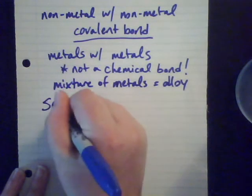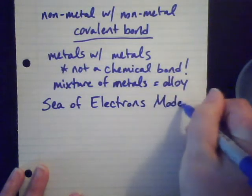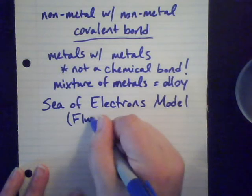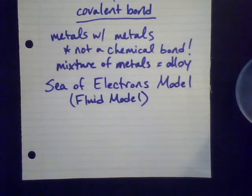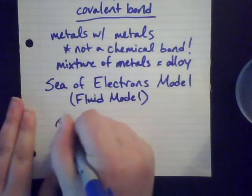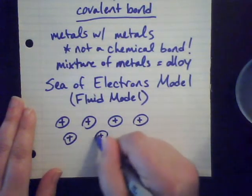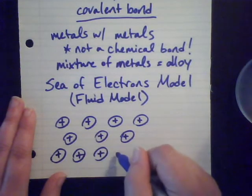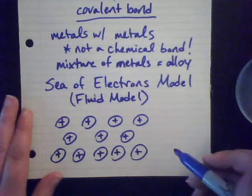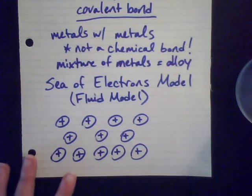The model we use is called the Sea of Electrons model. It's also called the Fluid model — you'll sometimes see it called that. Which is kind of weird, because when we're thinking about metals, we usually think about solids — of course, except for mercury. When we're talking about the Sea of Electrons model, metals in general are solids. I'm going to represent my solid here with these positively charged nuclei in a kind of orderly array. So we have a series of positively charged nuclei all mixed together — here's my solid.